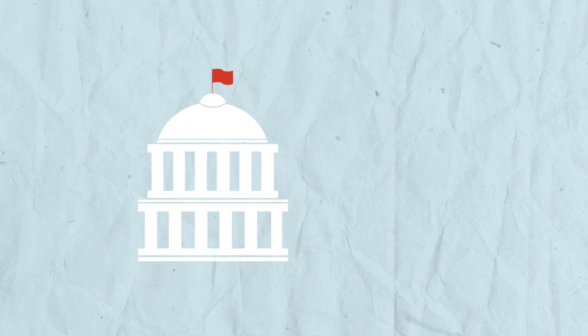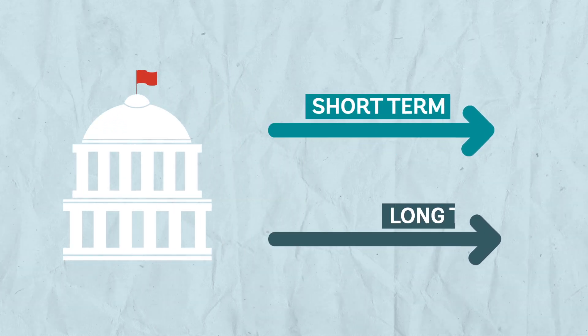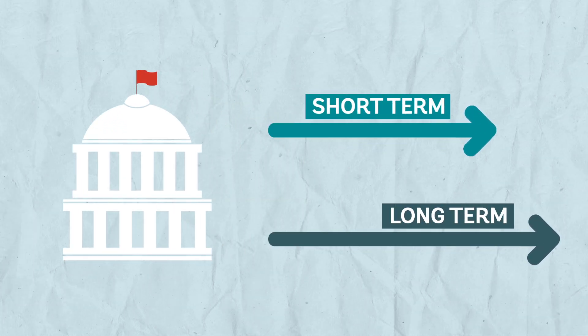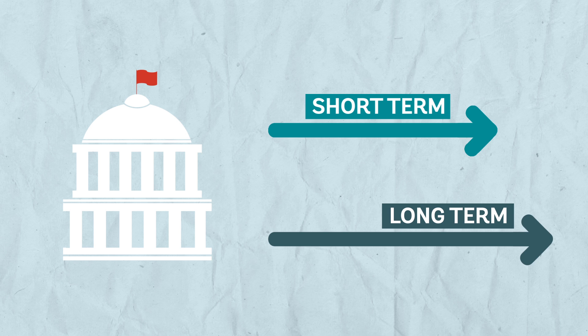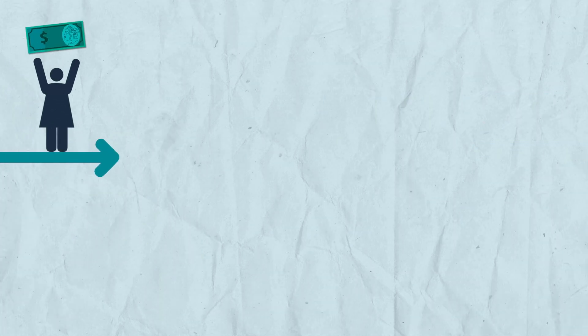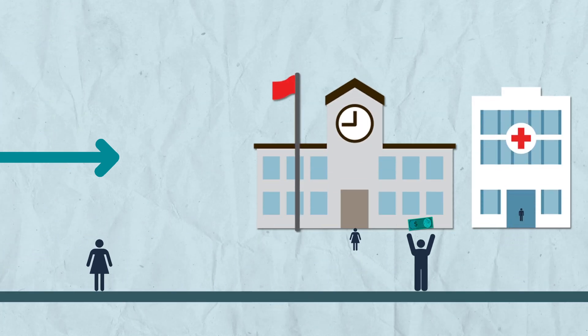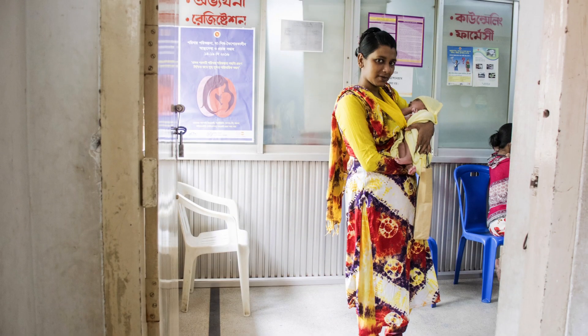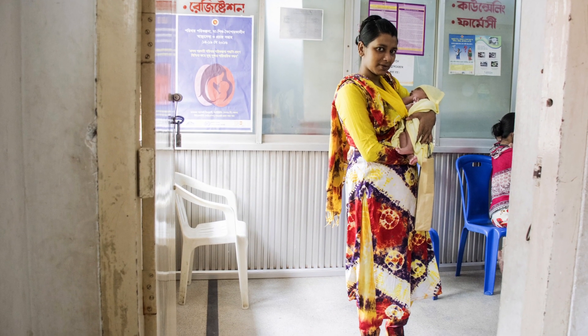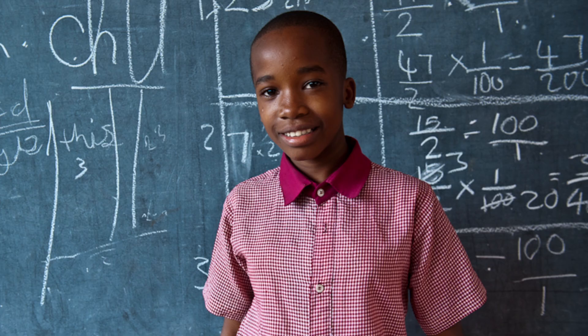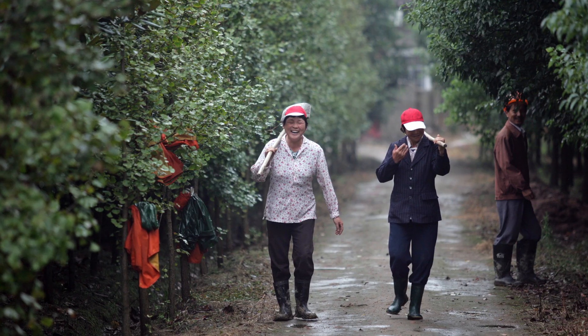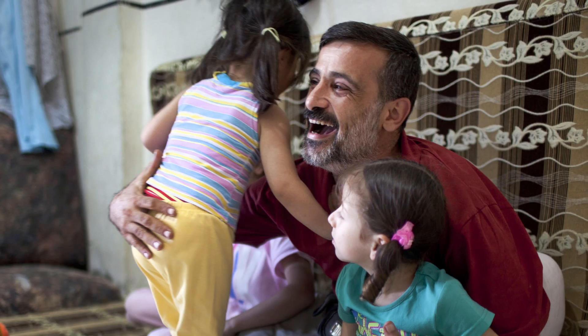Governments need to assess the short-term and long-term impacts of their tax and spending policies. For instance, cash transfers can bring immediate poverty relief, but spending on schools and hospitals could yield long-term benefits. How governments collect revenues and how those resources are ultimately spent determines the impact on poverty and inequality.